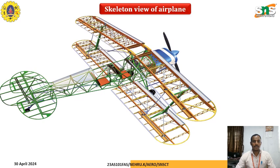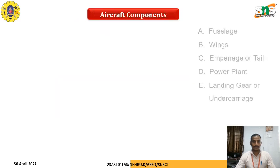This is the skeleton view of an airplane. It shows all the structural components like fuselage, wing, engine, empennage, all the control surfaces, and structural elements. This skeleton view helps us to understand all the different parts of the airplane.